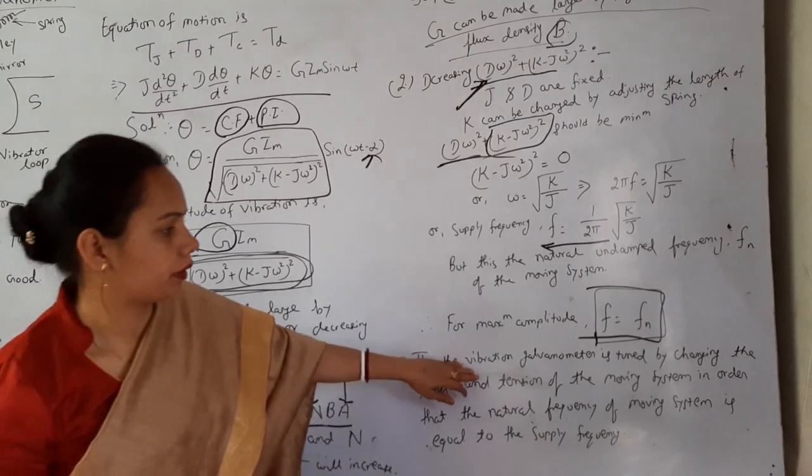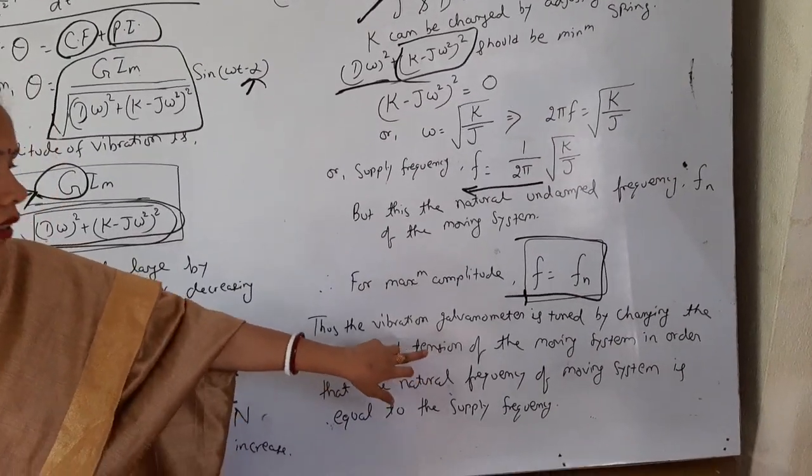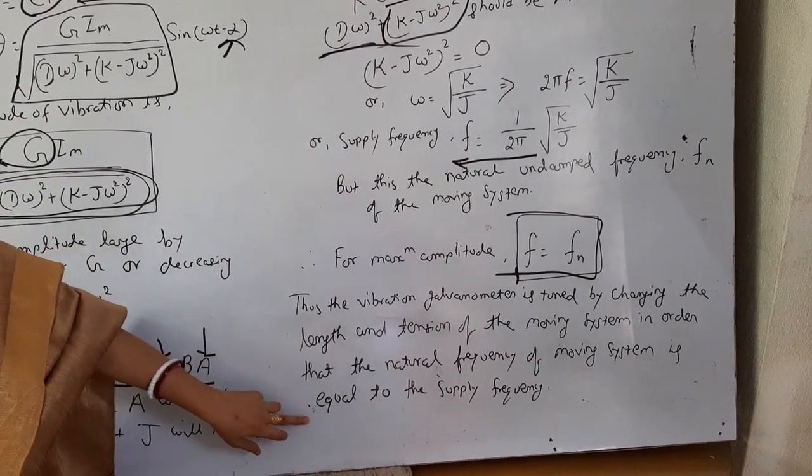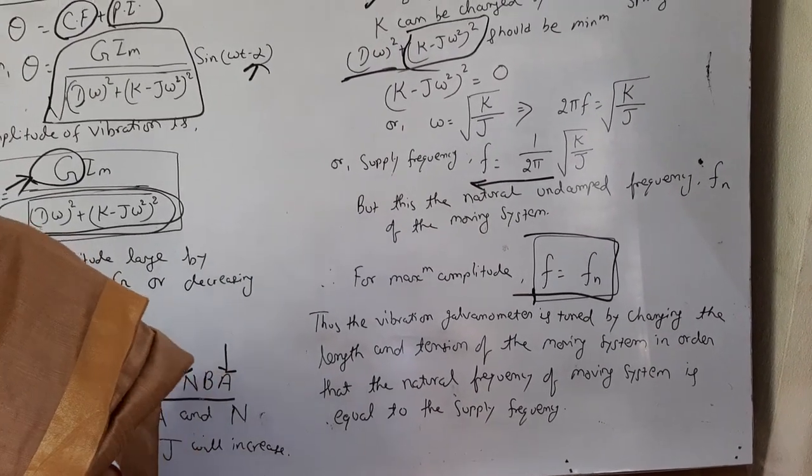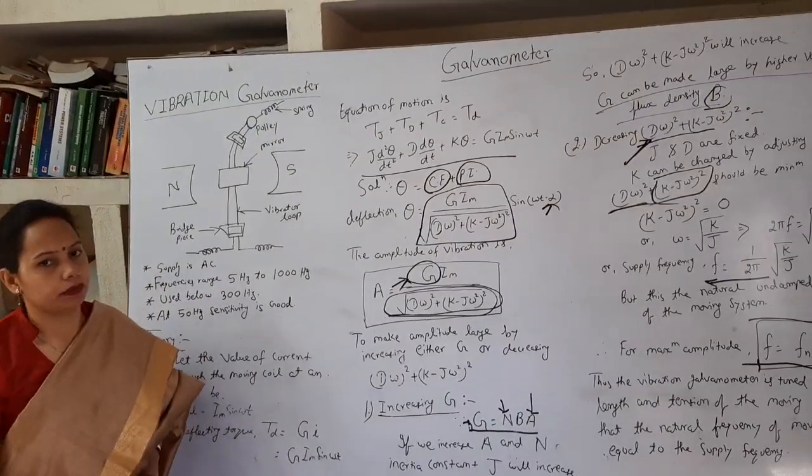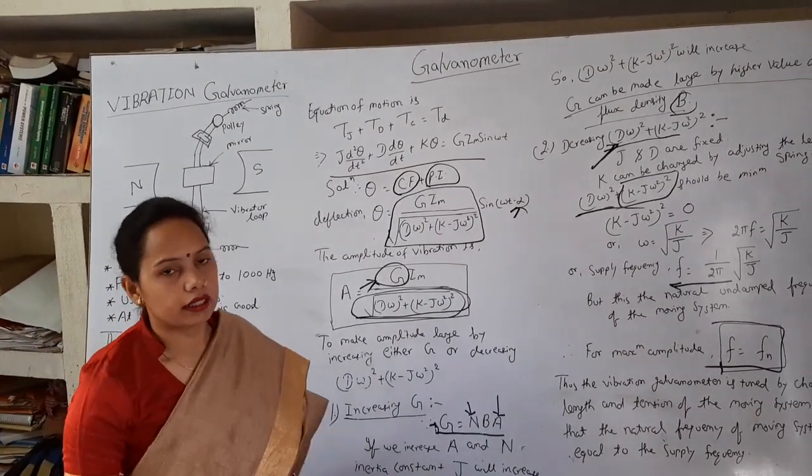Thus the vibration galvanometer is tuned by changing the length and tension of the moving system in order that the natural frequency of moving system is equal to the supply frequency. So that a stable operation of vibration galvanometer is achieved and that's also a good function in the future.